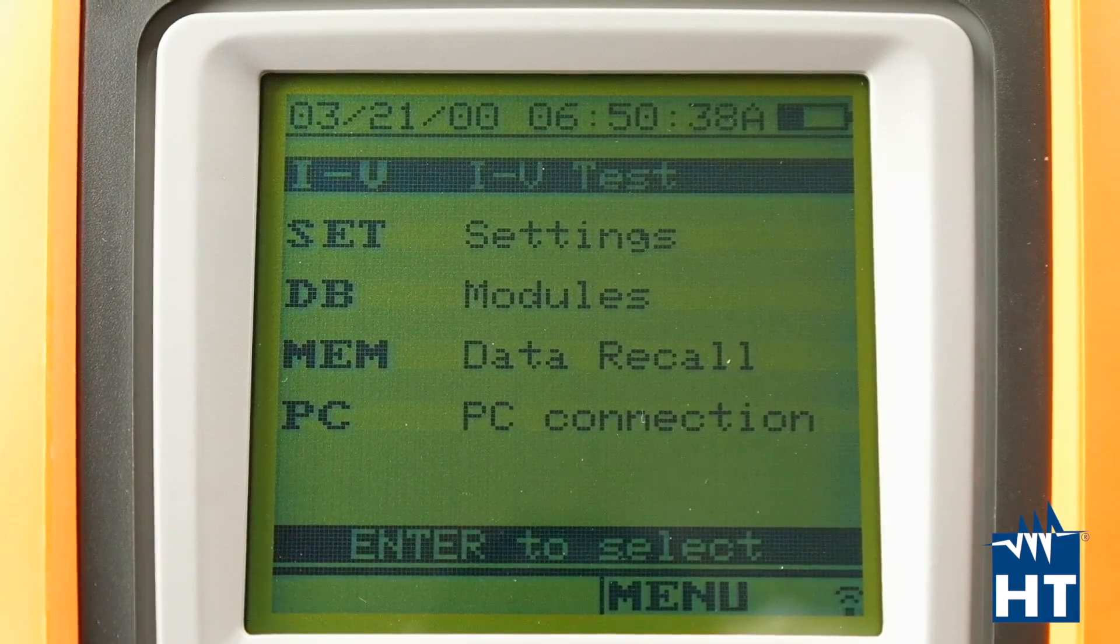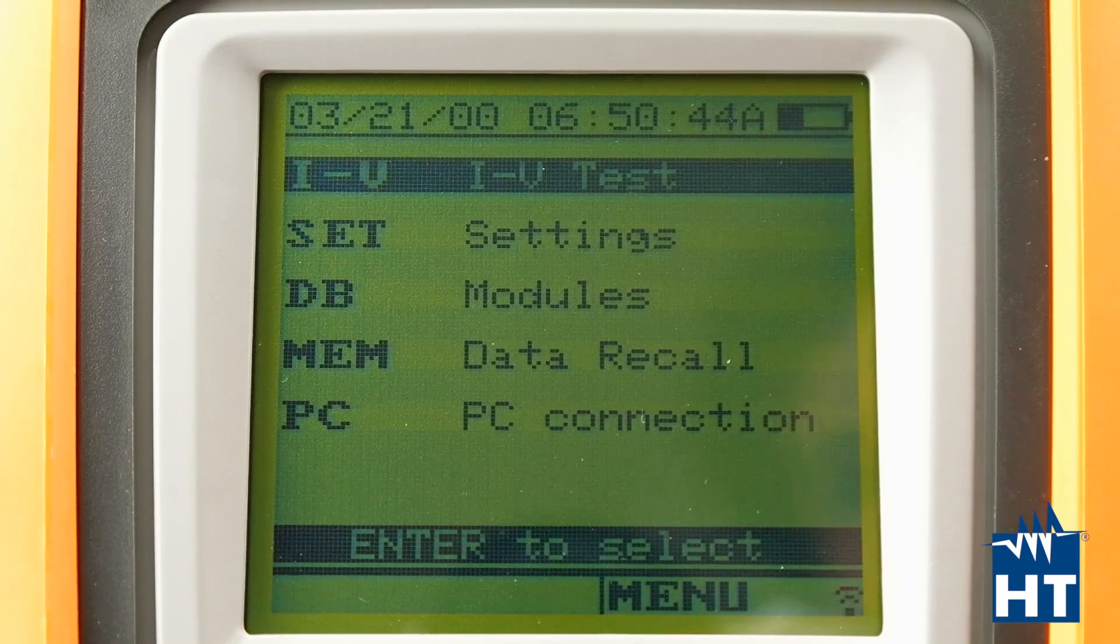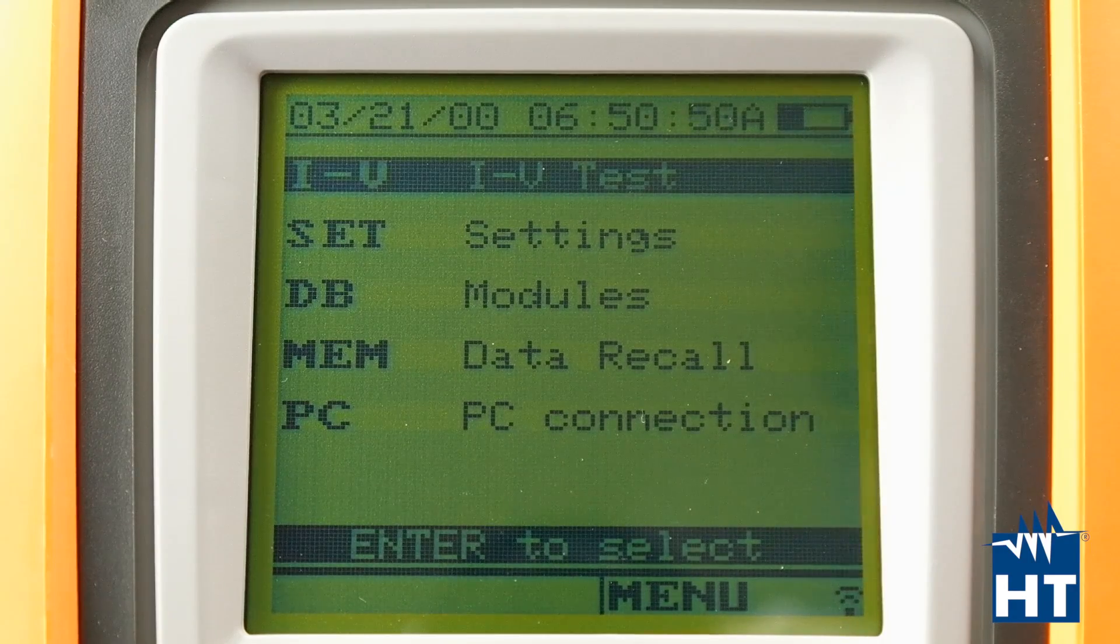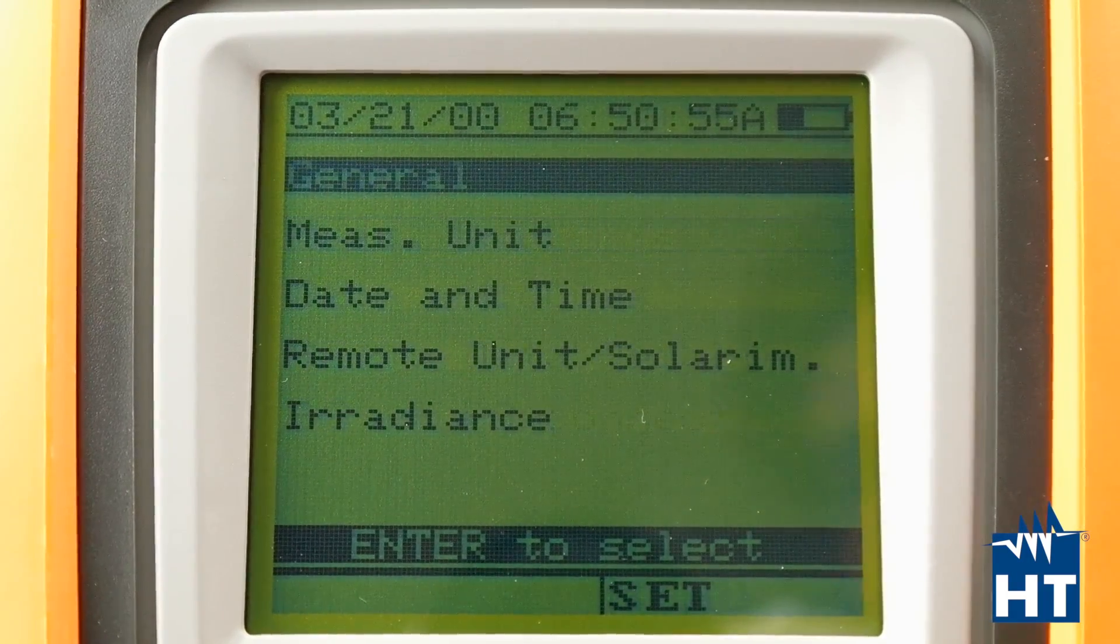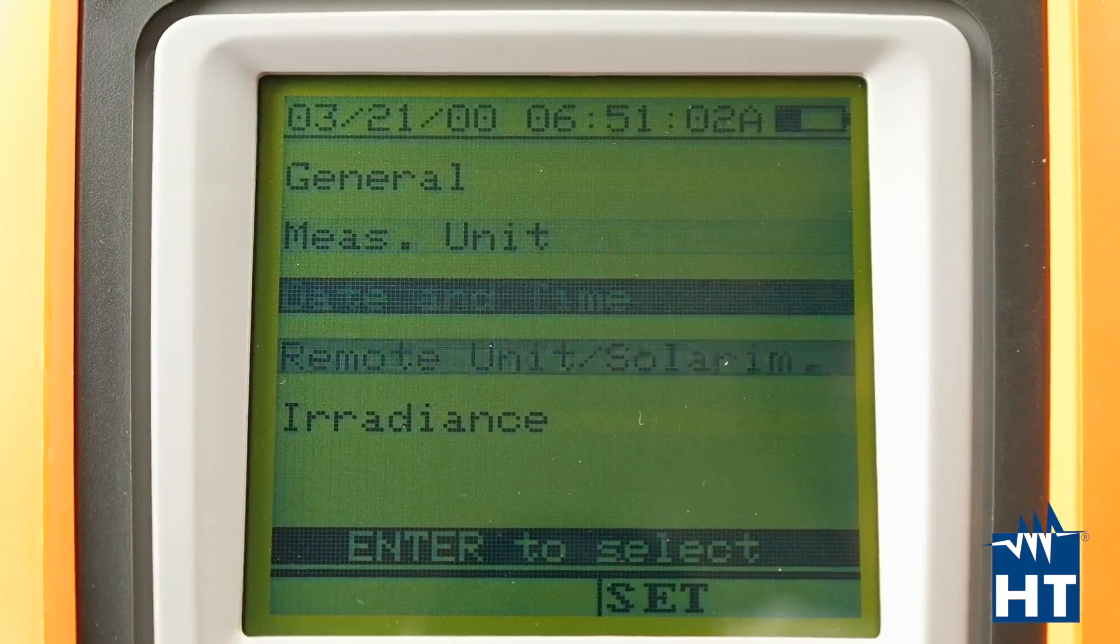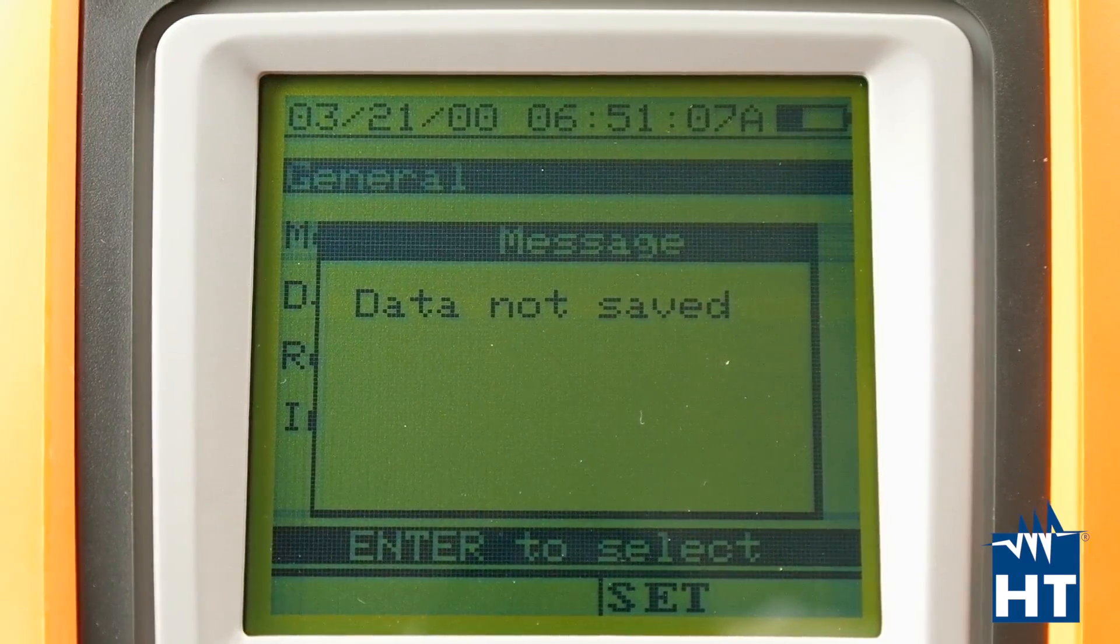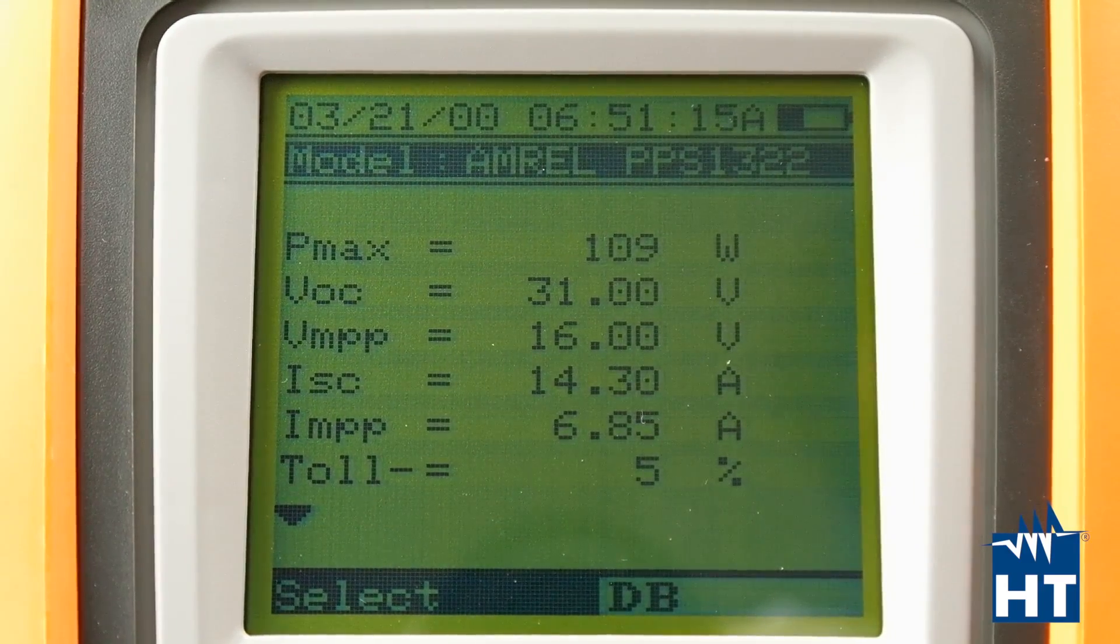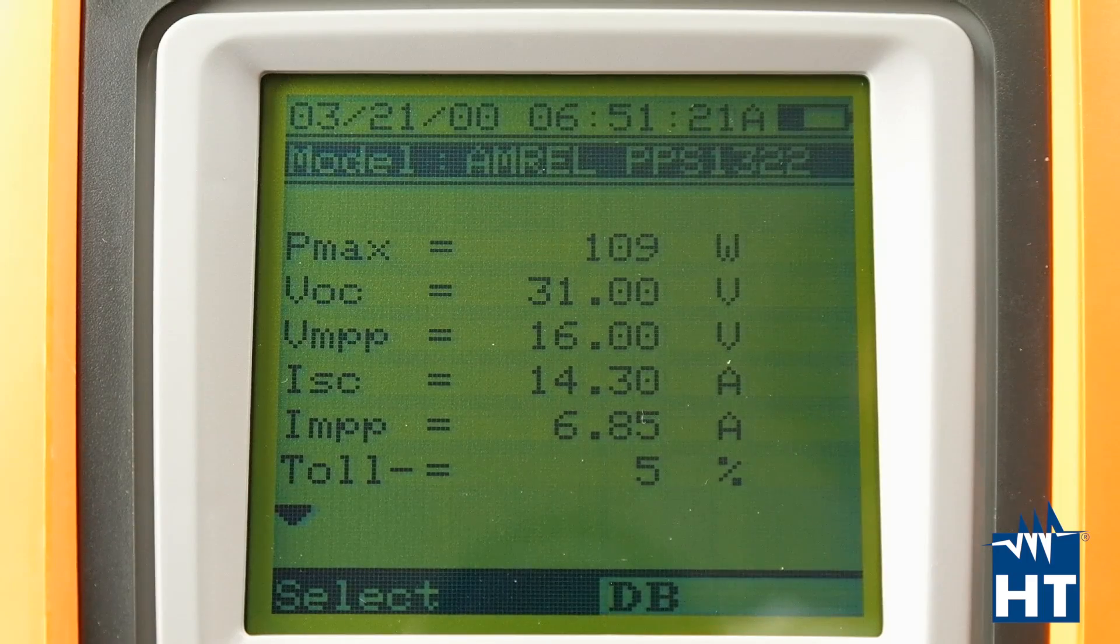Now I'm going to show you how the user interface of this IV400W is structured. As you can see here, we have the really simple menu where you can find the principal functions that you need to do measures. Before you do the measure, you can set whatever you need, like measurement units, date and time, remote unit. Then you can find also the database of the modules here, and all the modules that you have stored into the memory.